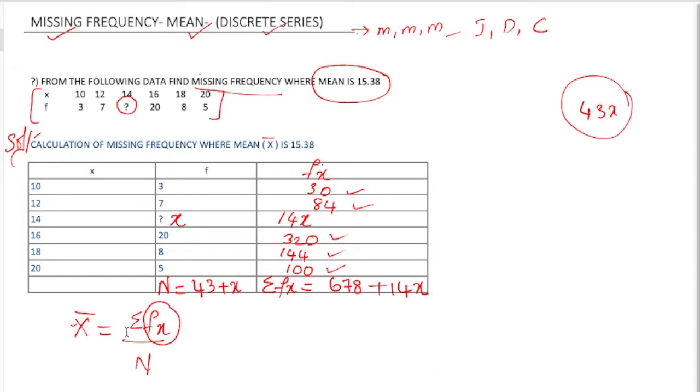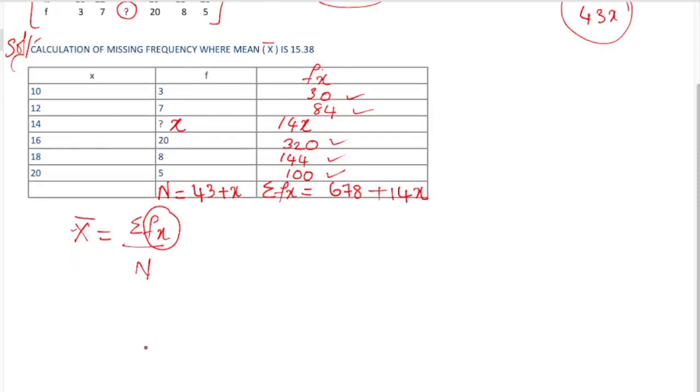Now substitute in the formula. Mean 15.38 equals summation fx, which is 678 plus 14x, by n, which is 43 plus x.